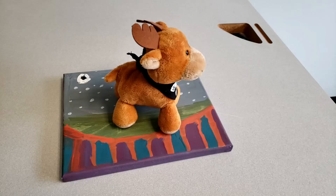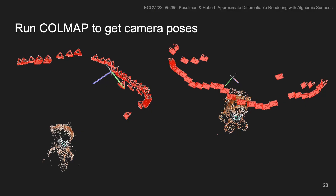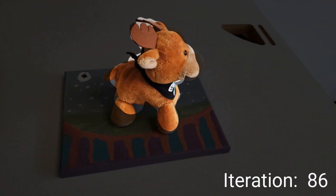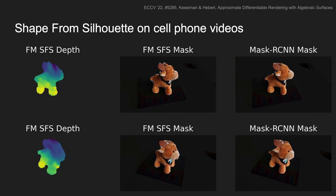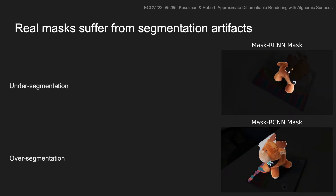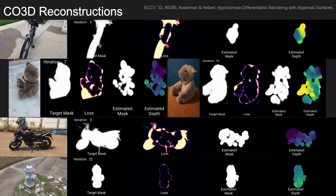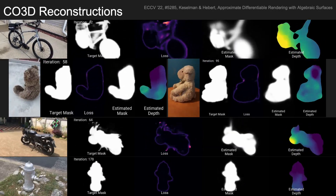We also try these on real video sequences. For example, here's a cell phone video. It's possible to extract poses using COLMAP, and masks using Mask R-CNN. We then can perform a reconstruction using our differentiable renderer. The reconstructions can obtain masks and depth maps from the sequence. Of note, some of the ground truth have artifacts — some frames are undersegmented, while other frames are oversegmented. Our differential renderer is able to recover good masks in both cases, because the low degree of freedom provides an implicit regularization. We can then run this on multiple sequences from Co3D, where we reconstruct fire hydrants, motorcycles, and several stuffed animals and a bicycle.